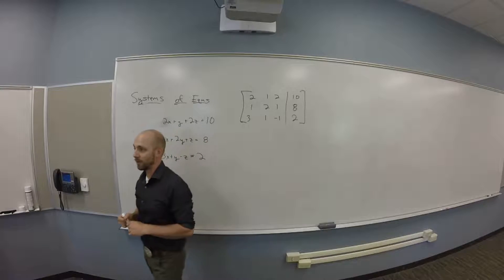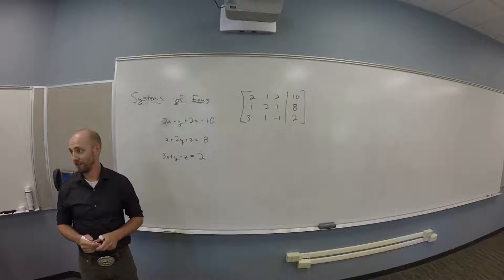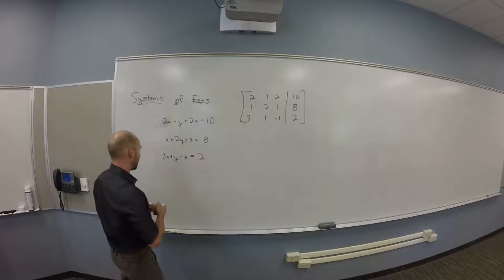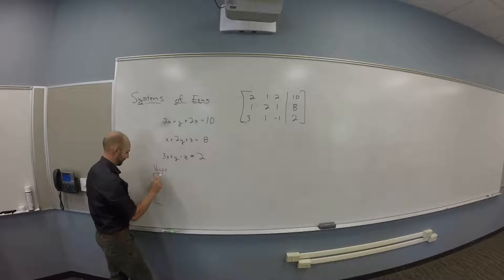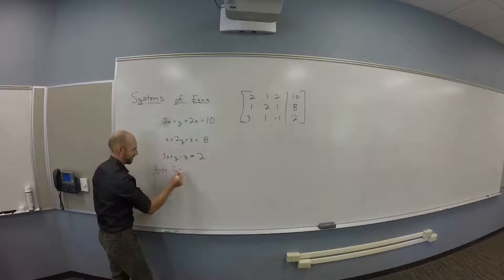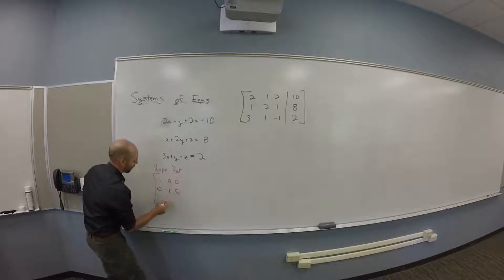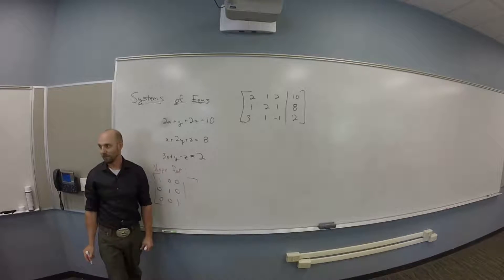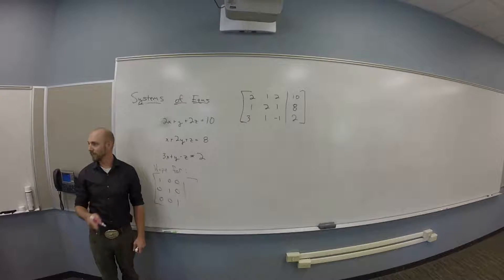Now, the deal with 3 by 3s is do not chase these around in some random order. Your goal at the end is hopefully to end up with 1, 0, 0 / 0, 1, 0 / 0, 0, 1 augmented by stuff. Because out of this I could read x is, y is, and z is.